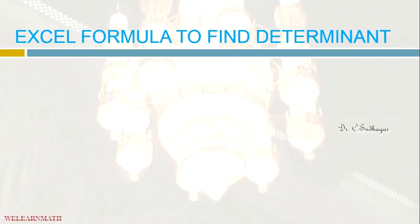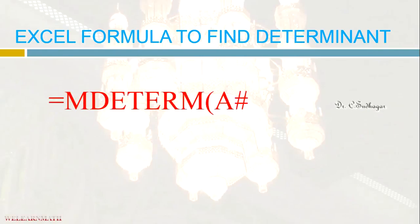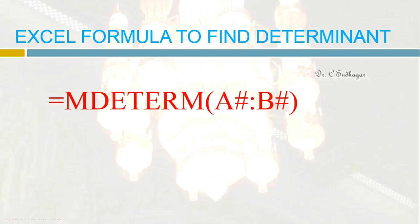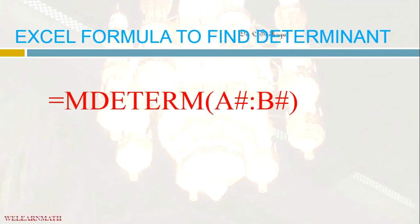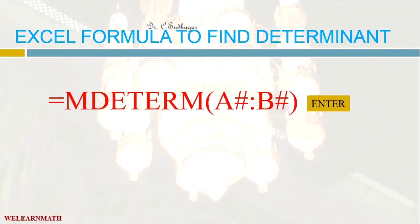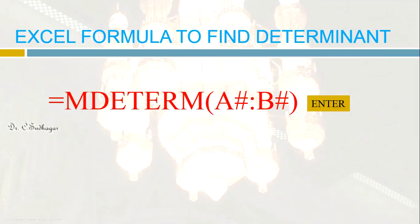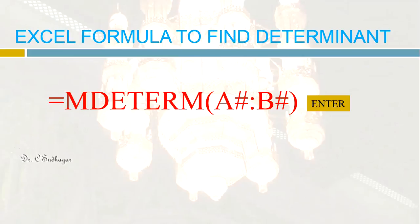Now let us see the Excel formula to find the determinant. The Excel formula is equal to MDETERM, which means matrix determinant. We give the array address inside the parenthesis and press Enter. Now let us go to an Excel sheet to find some determinant values.